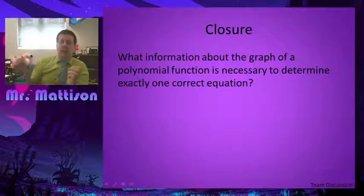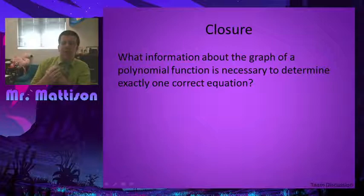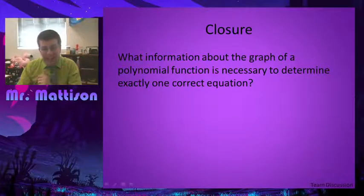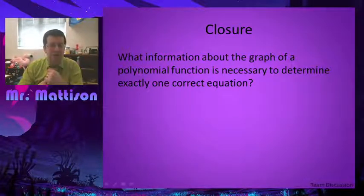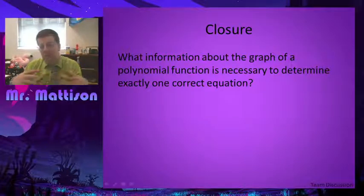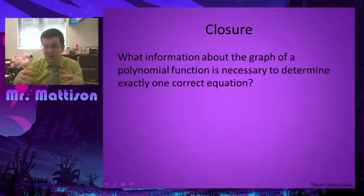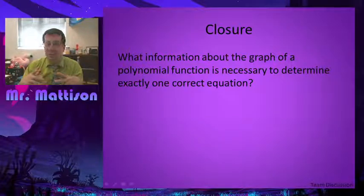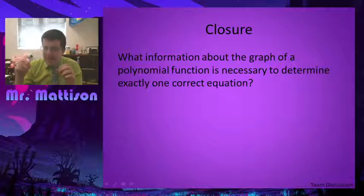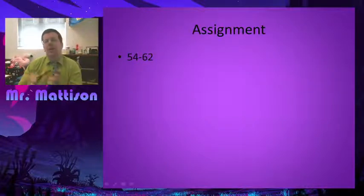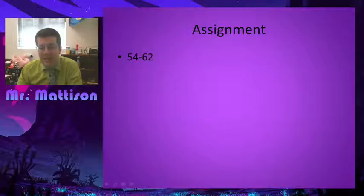Then, a little closure here. What information about the graph of a polynomial function is necessary to determine exactly one correct equation? So, you need to know what its intercepts are, and how it intercepts them, and you need at least one other point, assuming you were looking for the smallest degree possible. If you're not looking for the smallest degree possible, then you need additional points in order to reduce that down to a singular one. But, that's again why we typically just say, give us the smallest degree possible. Alright, with that, here is our homework, 54 through 62, and I will talk to you guys next time.